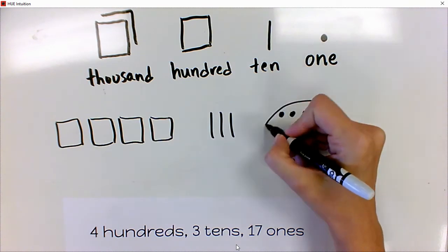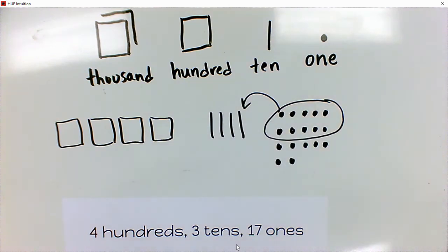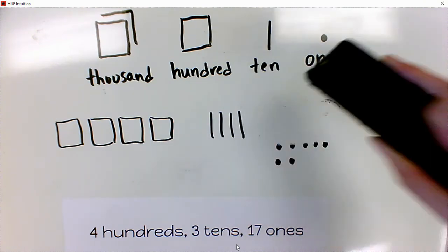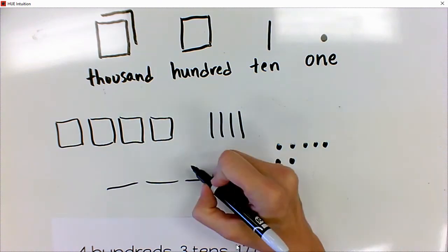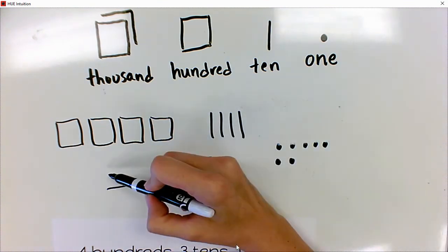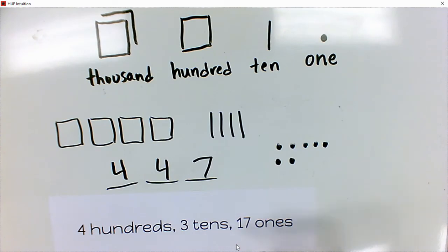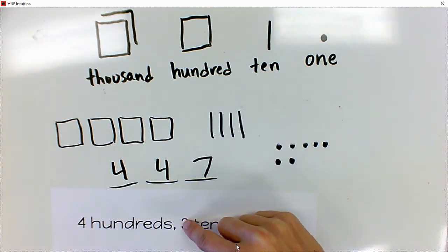Bundle them together and move them over to be with the other tens. Now I have seven ones, four tens, and four hundreds. This is the number four hundred forty-seven. It doesn't look like it because here I can see only three tens, but I ended up with four tens — because this group of ten ones was actually another ten.